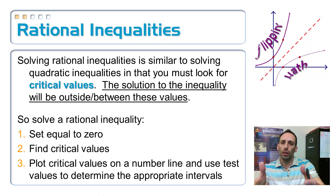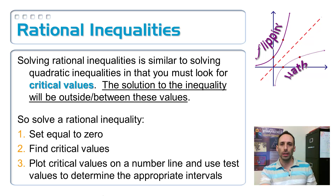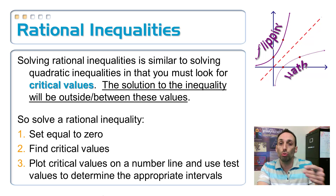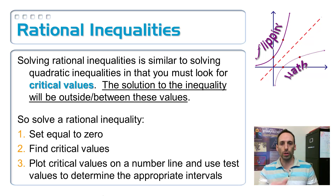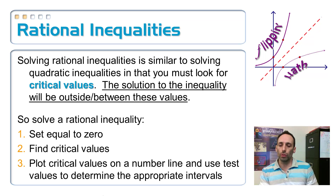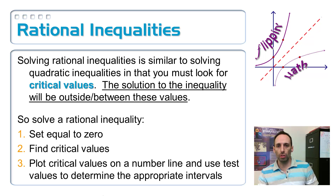Now here's what we want. We're finished with the review. Solving rational inequalities is very similar to solving quadratic inequalities — you're looking for critical values. The solution to the inequality is going to be either between or on the outside of those critical values. When solving these, here are the three steps. Step one: make it equal to zero — solve an equation, not an inequality.